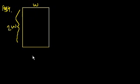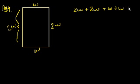So its perimeter is going to be W plus W plus the two lengths. So its perimeter is going to be 2W plus 2W plus W plus W, and that's going to equal 10. If we add up all the W's, that's 2, 4, 5, 6. So we get 6W equals 10.